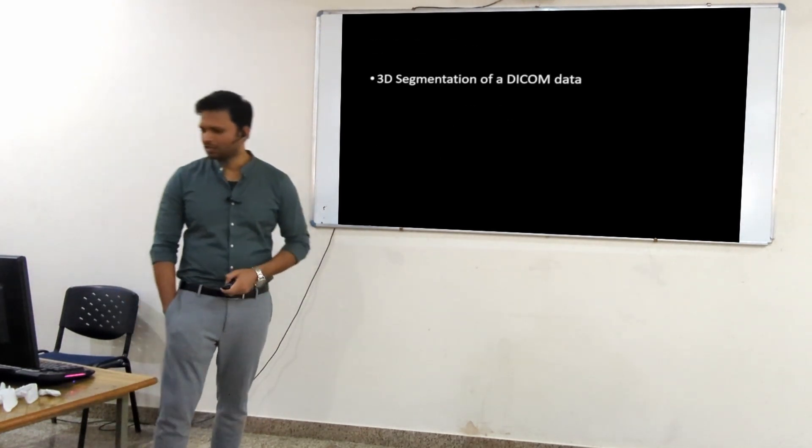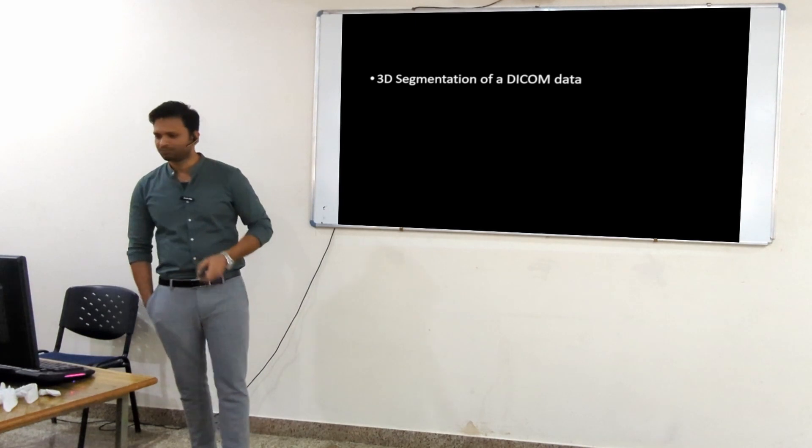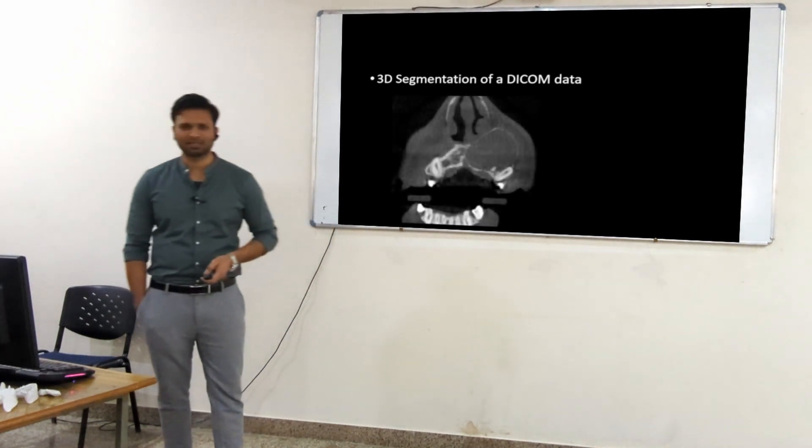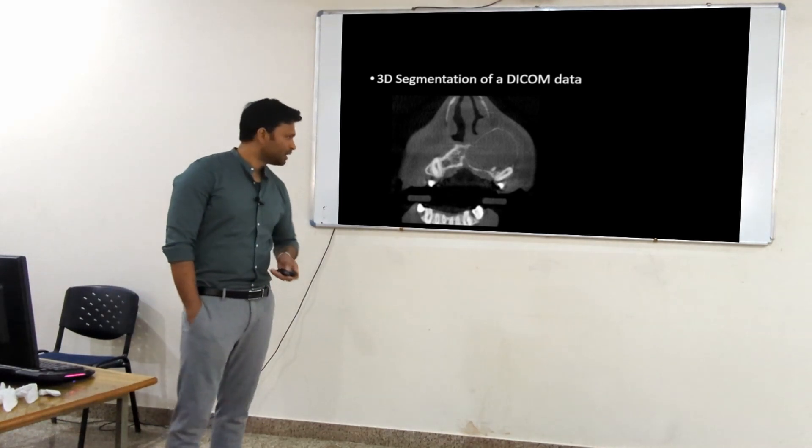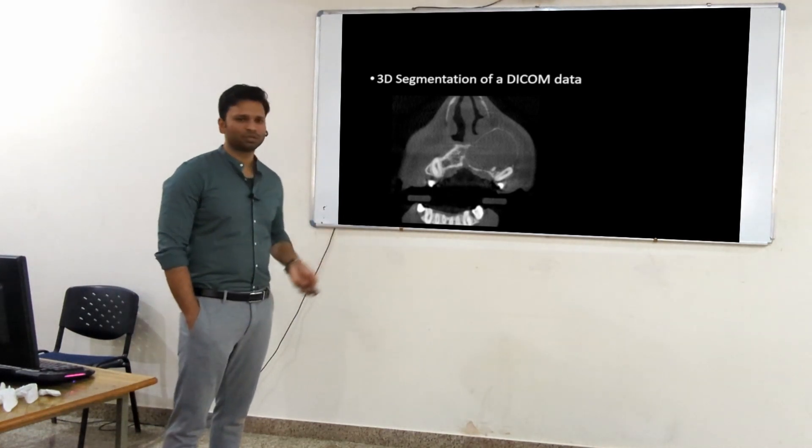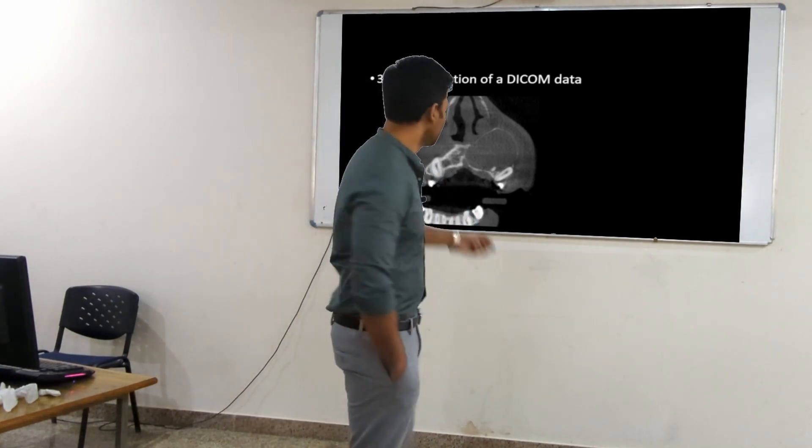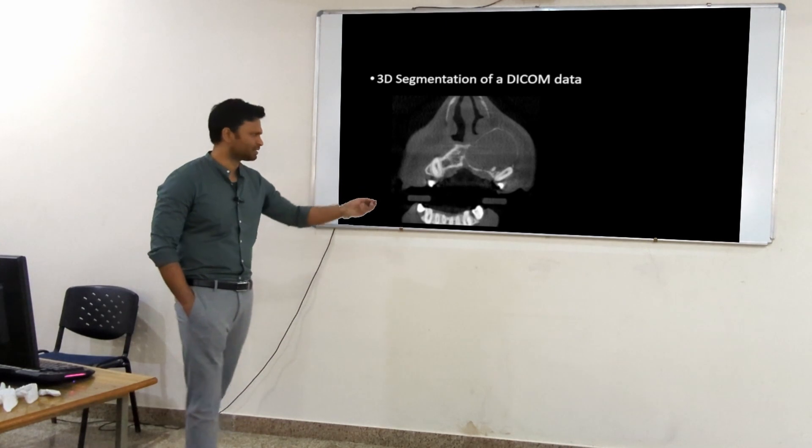We'll start with 3D segmentation of DICOM data. This is a case of radicular cyst in the left maxilla. This is fine if you're going to show the CT scan to your colleagues or surgeons - they have practice reading DICOM files.